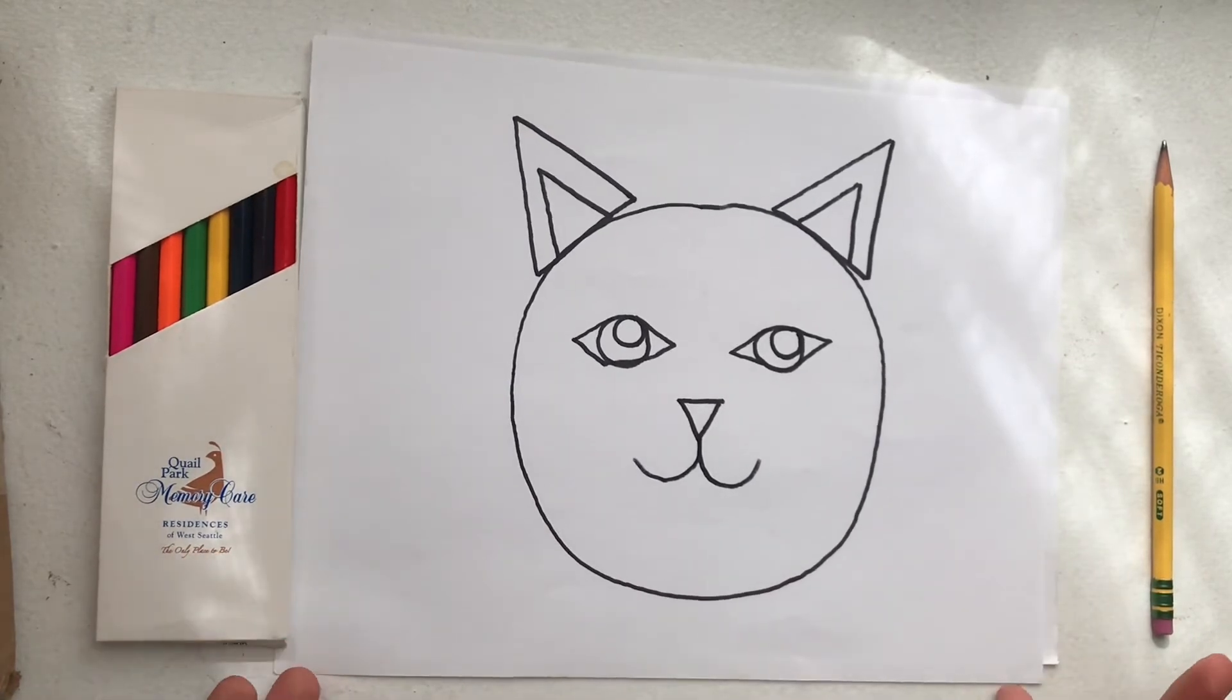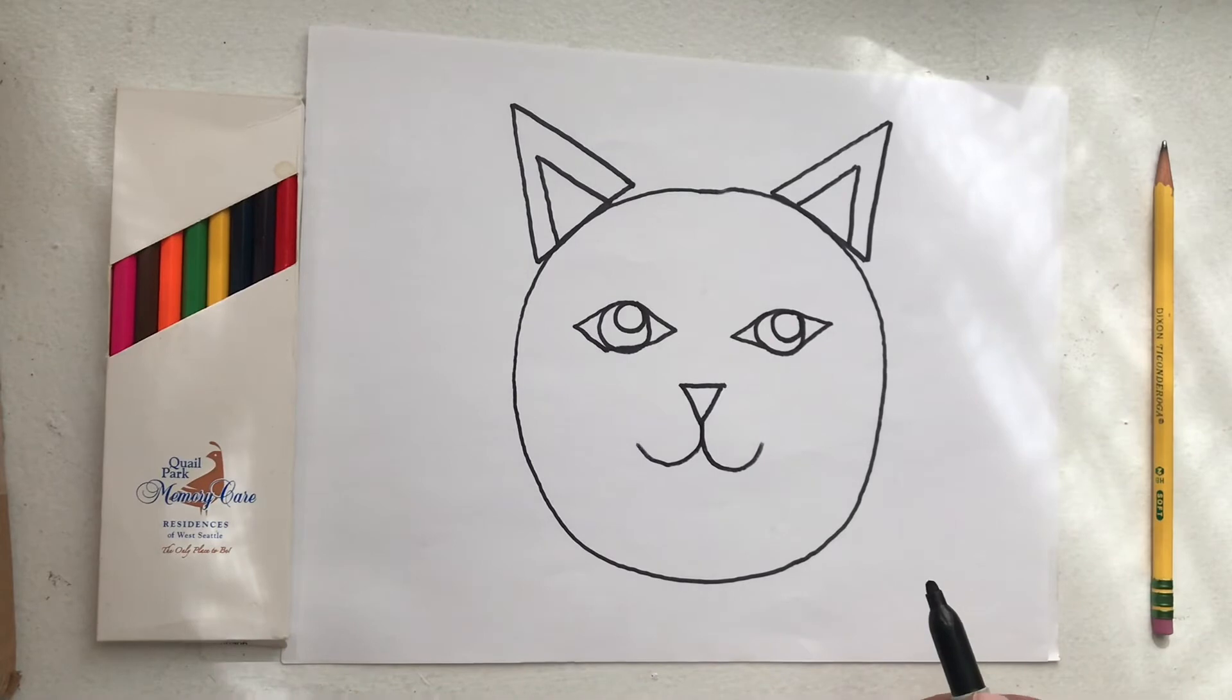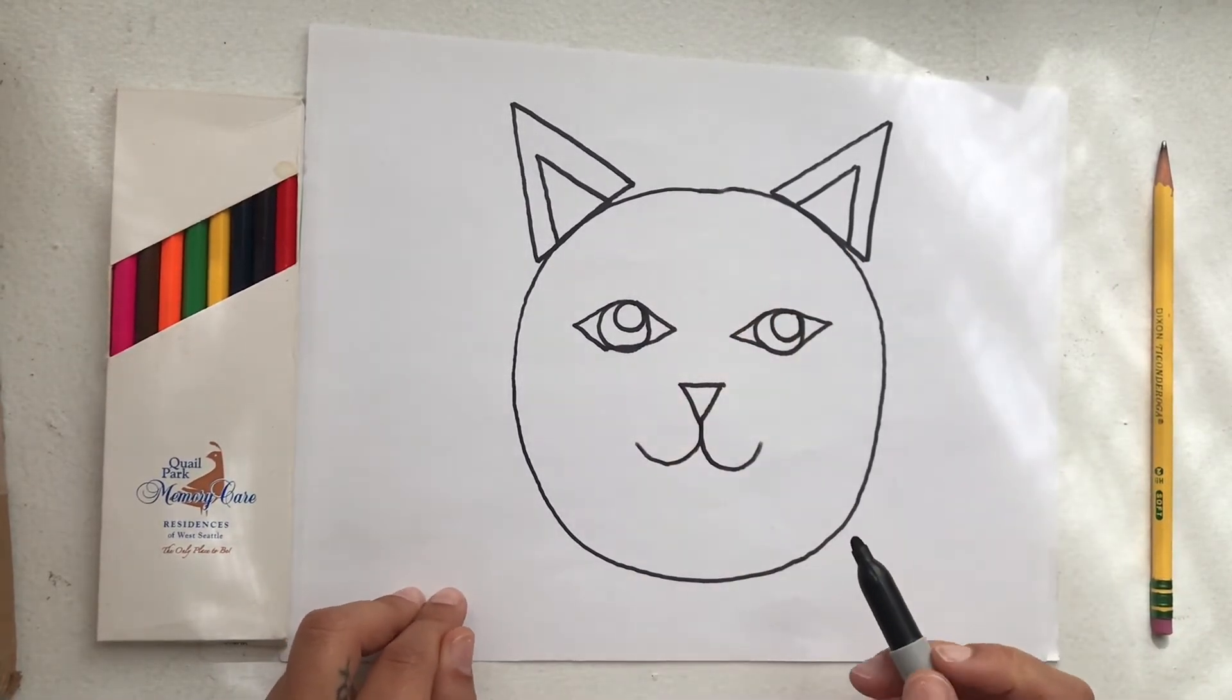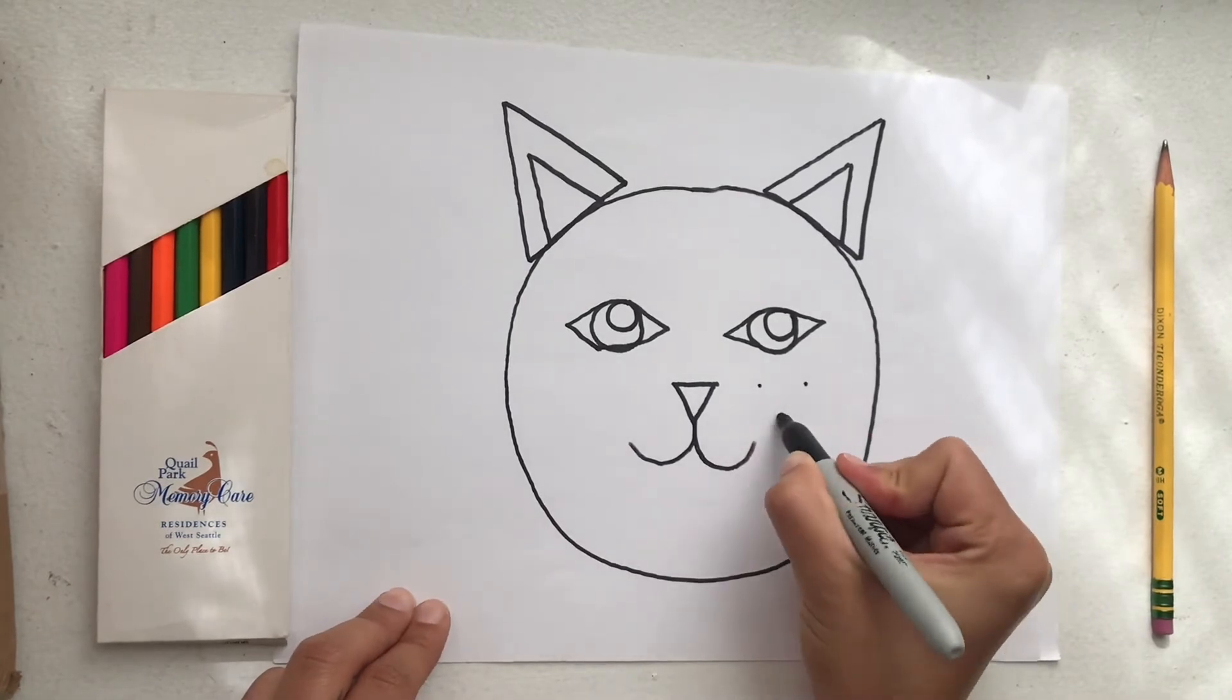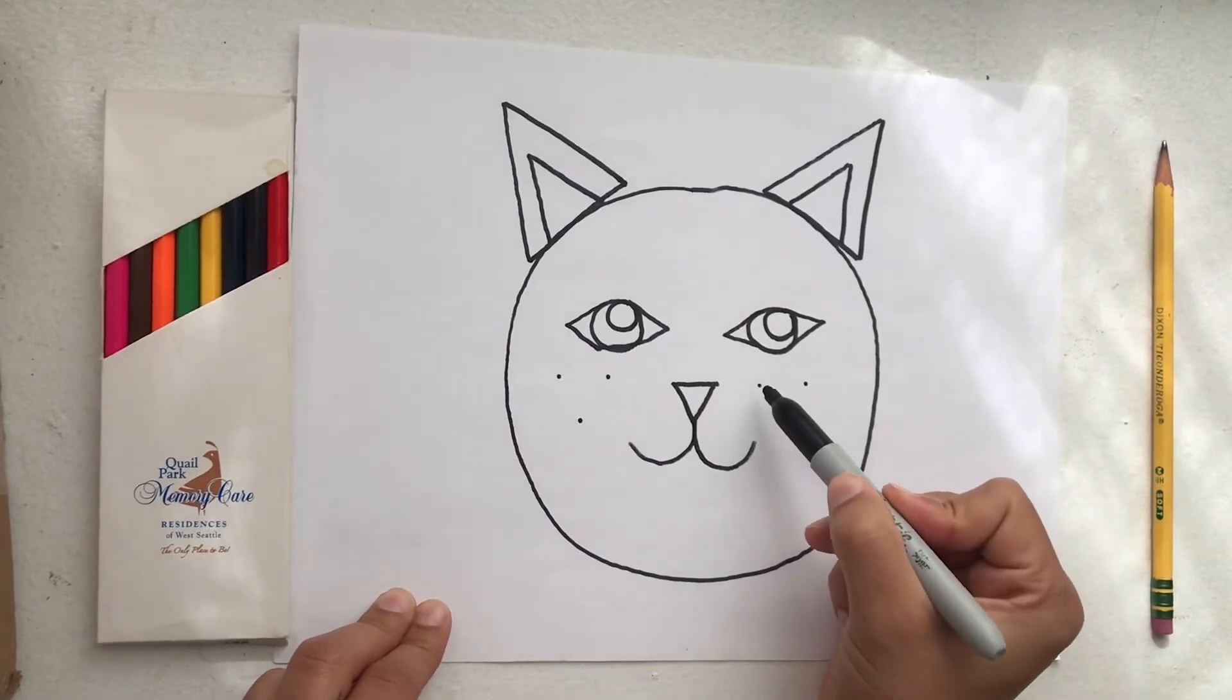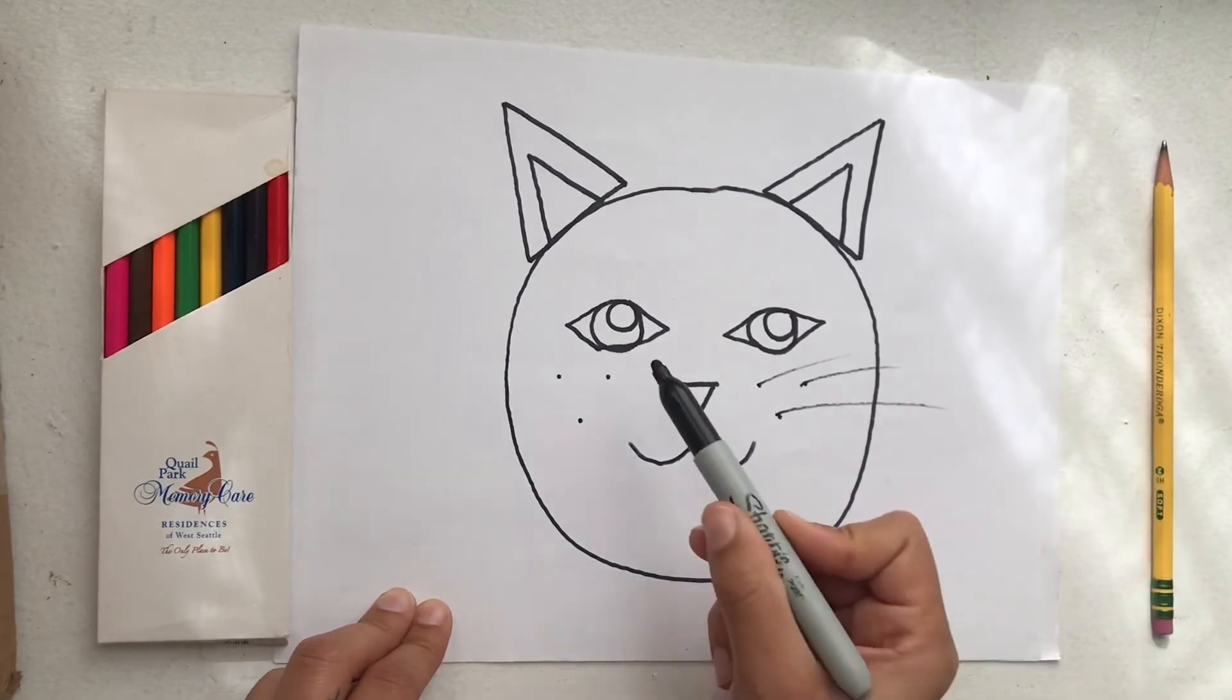Now our kitty face is pretty much done. The rest of this is up to you. If you would like to add any special details this is your time. You can make the kitty have a bow on its head or eyelashes. I'm going to make sure my kitty has whiskers. So I'm going to do three dots on both cheeks. From each dot I'm going to do some lines coming out and those are going to be my whiskers.